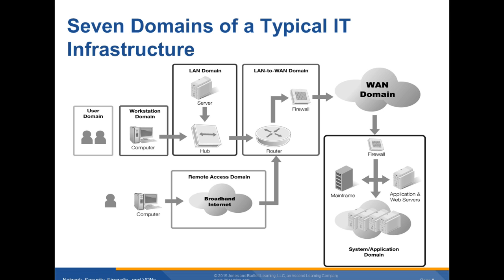The WAN domain. Organizations with remote locations require a WAN to interconnect them. Organizations typically outsource wide-area network connectivity from service providers, such as Verizon or Sprint, for end-to-end connectivity and bandwidth. This domain typically involves routers, circuits, switches, firewalls, and equivalent gear at remote locations, sometimes under a managed service offered by the service provider.